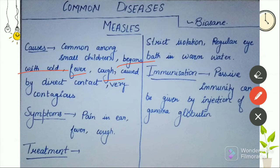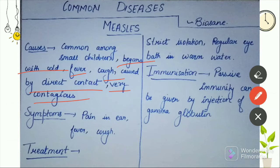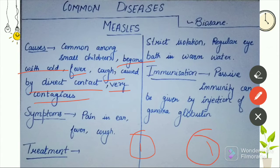Measles is caused by direct contact. It is a communicable, contagious disease — very contagious. If one person has measles, the other person will also get measles through direct contact.